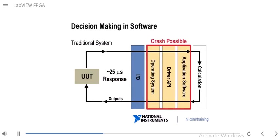In this slide, we see how decision-making is done in software. In a traditional system, you've got your UUT — your unit under test — and you have all these layers between the hardware and the actual calculation. It has to go through an IO layer, then run on an operating system, then through a driver API, and then your application software where you're defining the calculation. A crash can occur at the OS level, at the API level, and also at the application software level, so there are several places for a crash to occur.